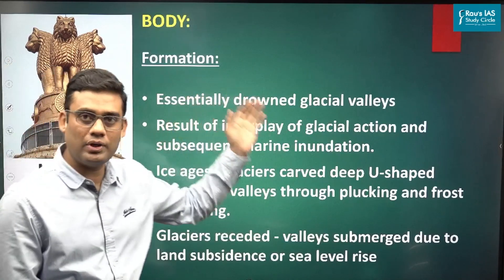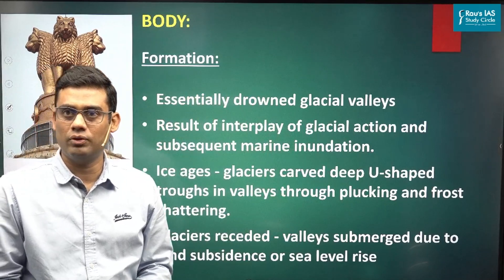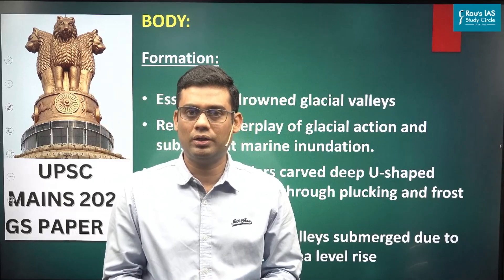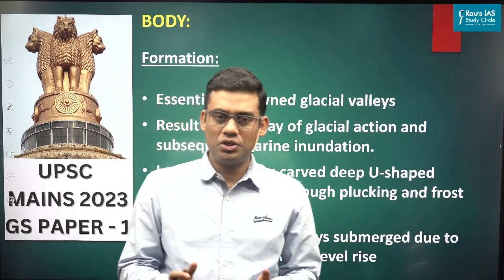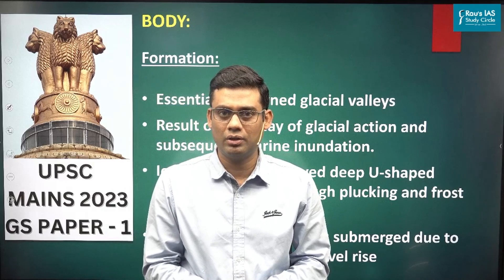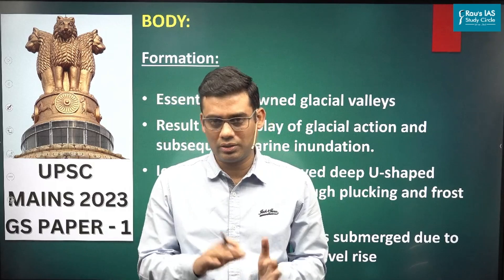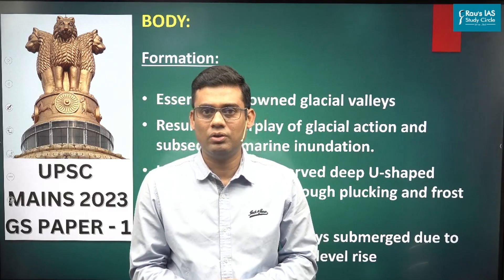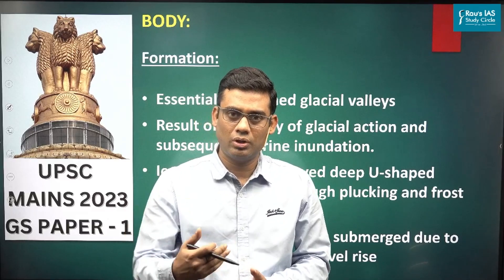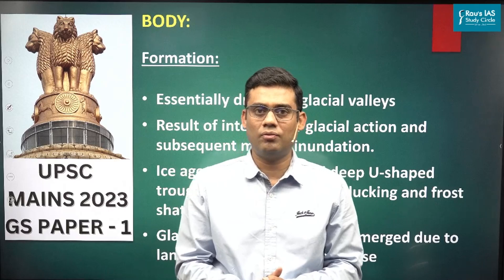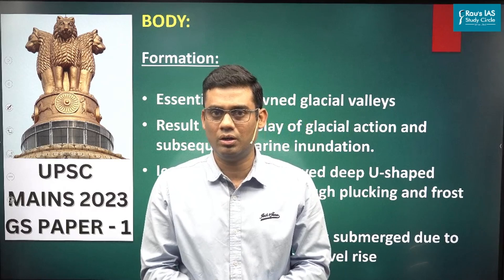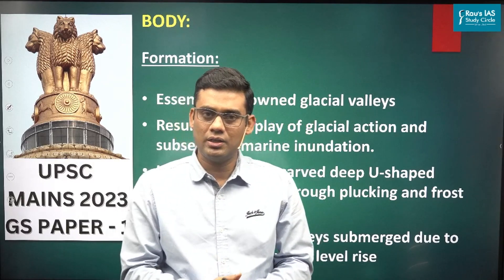Moving on to the body part, the first thing we are explaining is the formation of fjords. Fjords are primarily drowned glacial valleys. Glaciers carve out U-shaped valleys in subpolar zones such as the Scandinavian regions. During the last ice age, glacial advance occurred in these areas and the glaciers carved out these U-shaped valleys, which were glacial troughs.